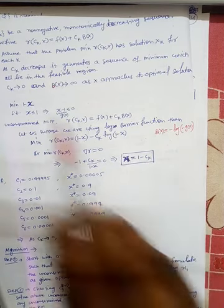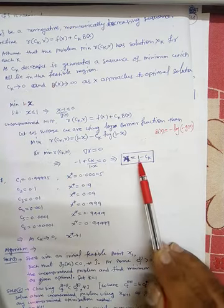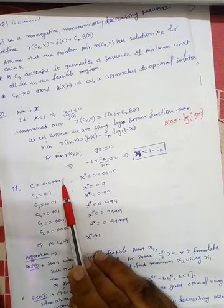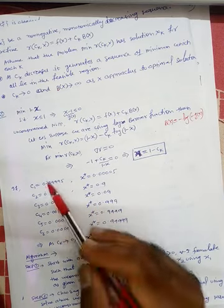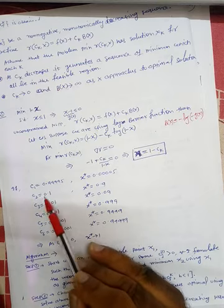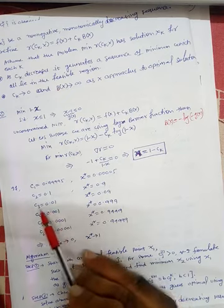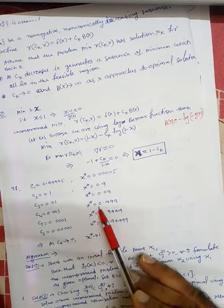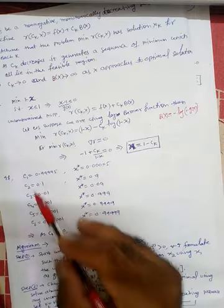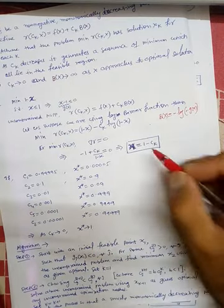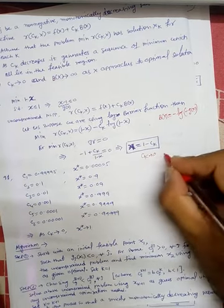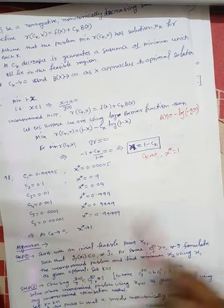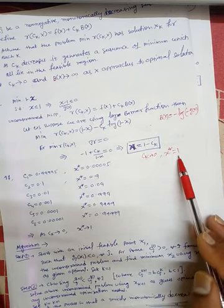Since c_k tends to 0, x* tends to 1. Starting with c_1 = 0.9995 gives x* = 0.0005; c_2 = 0.1 gives x* = 0.9; c_3 = 0.01 gives x* = 0.99; c_4 = 0.001 gives x* = 0.995, and so on. As c_k → 0, x* → 1. So the optimum solution is x* = 1.